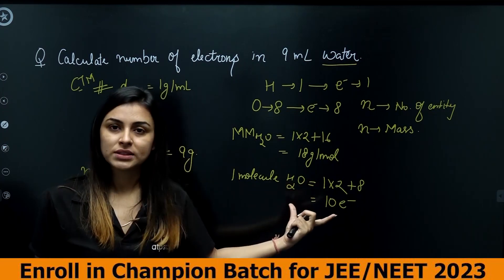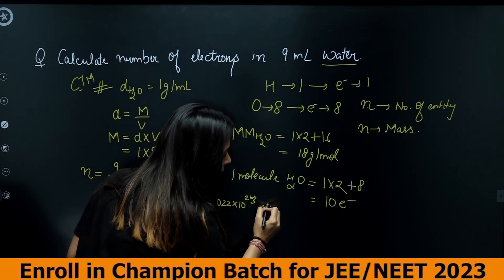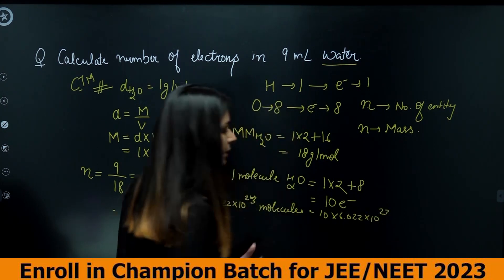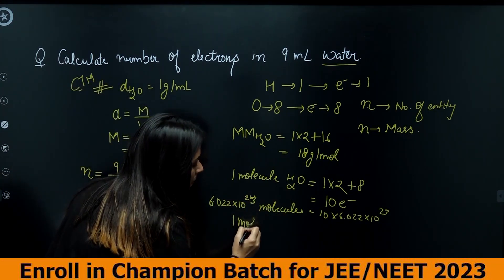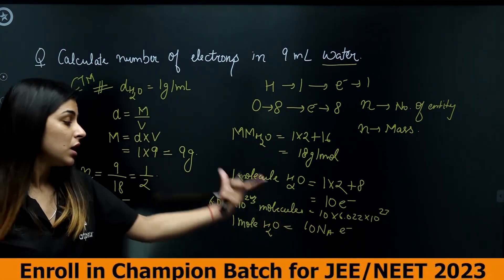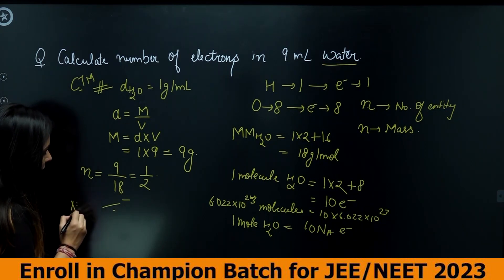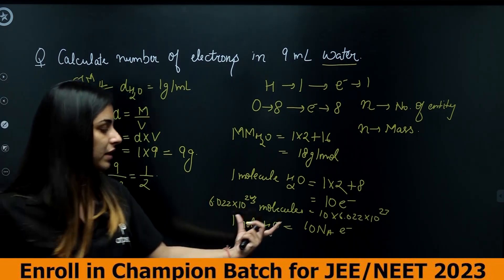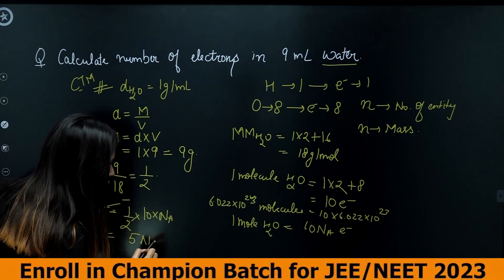If one molecule has 10 electrons, then one mole of H₂O (= 6.022 × 10²³ molecules) contains 10 × Avogadro's number electrons. So 1 mole of H₂O has 10 × Nₐ electrons. For 1/2 mole: number of electrons = (1/2) × 10 × Nₐ = 5 × Avogadro's number = 5 × 6.022 × 10²³ electrons.